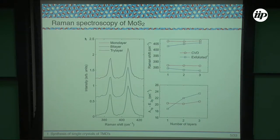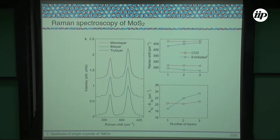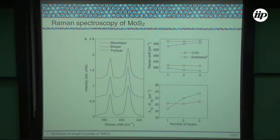You can also use Raman spectroscopy. With Raman, you check the two characteristic peaks. If you measure the distance between the positions of these two peaks for monolayer, bilayer, or trilayer, you can identify the number of layers. For CVD monolayer samples, the distance between these two peaks is around 20 cm⁻¹, slightly different from exfoliated samples where it is around 18 cm⁻¹. This difference could be due to strain in these monolayers.